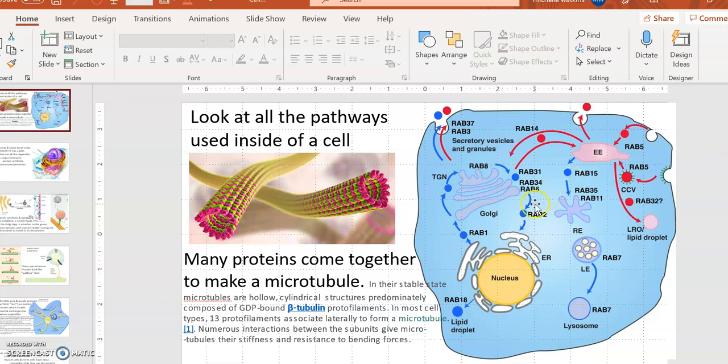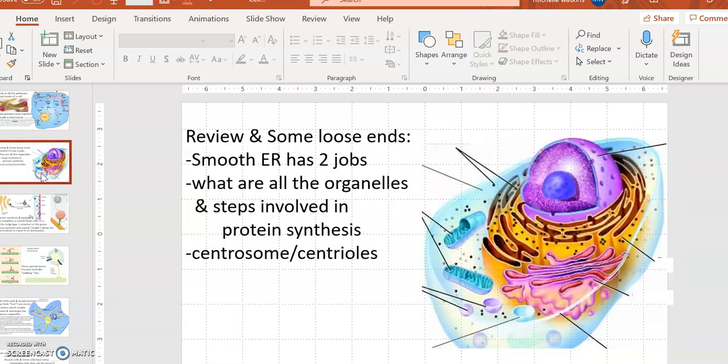Some of the transport vesicles actually are packaged and become organelles. Where does the transportation occur? Along the microtubule. Someone in class thought it was inside the microtubule, but it's not. Let's look at how it travels along the microtubule.